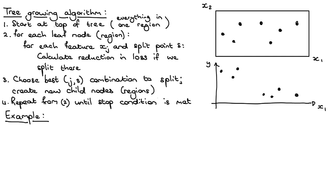We start at the top of the tree with all of our training items in one region. Then for each current leaf node, for each possible feature XJ and possible split point S, we calculate the reduction in loss if we split at that position — we pretend like we're splitting and see how much the loss gets better. We consider all the leaf nodes, all the features, and all the possible split points, then choose the best feature and split combination that leads to the biggest reduction in the loss.